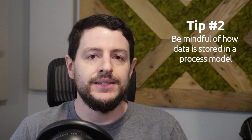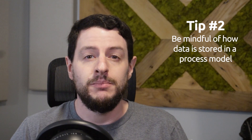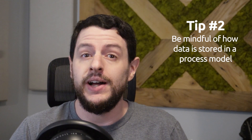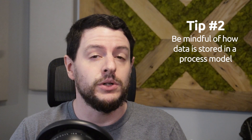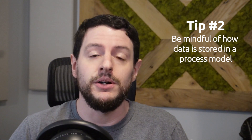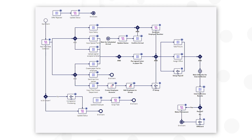Let's get into our second tip: be mindful of how data is stored in a process model. In our example from part one, we can't see exactly how the data is being handled, but we can interpret that process variables are being used to pass information from each node throughout the process.